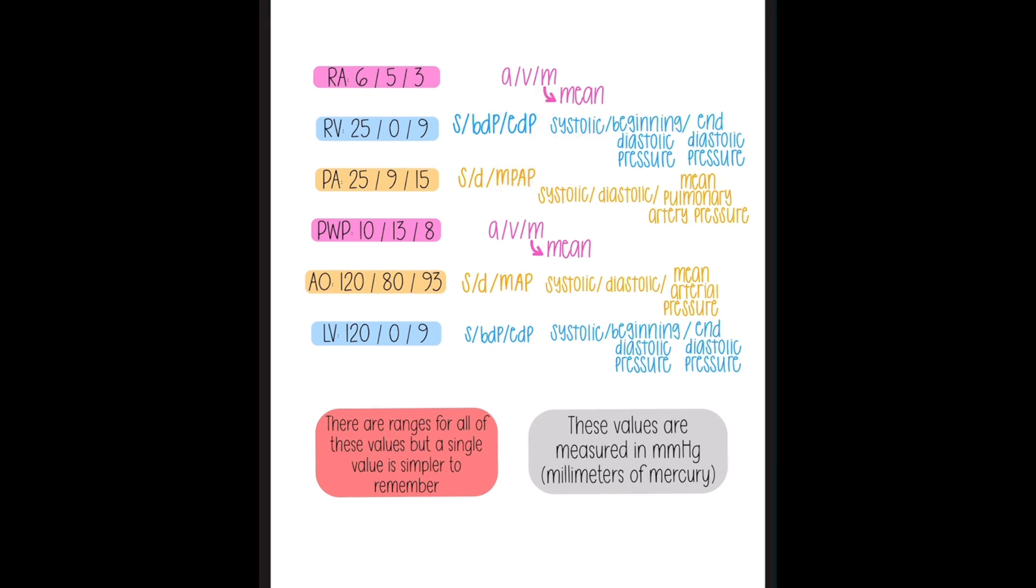Next up are the ventricles. So the right ventricle and the left ventricle you notice are written the same way, systolic, beginning diastolic pressure, and end diastolic pressure. So please, even if you're writing it as the abbreviations, know fully what each of those things mean and I've written it to the right for you. So again, systolic or systole, systolic pressure, beginning diastolic pressure and end diastolic pressure. And that will be reflective of the same, both in the right ventricle and the left ventricle.